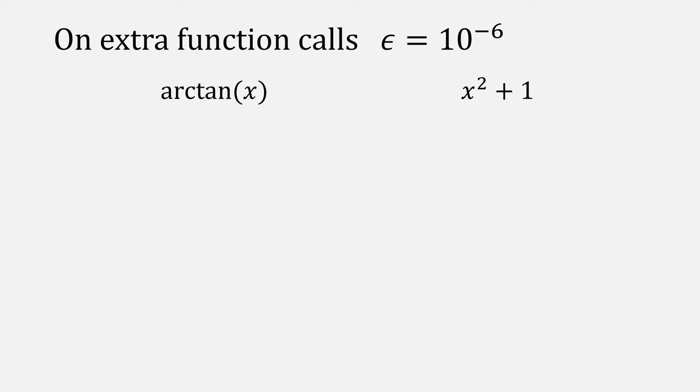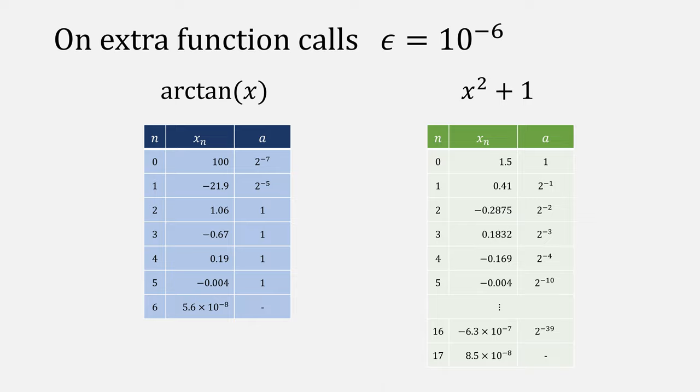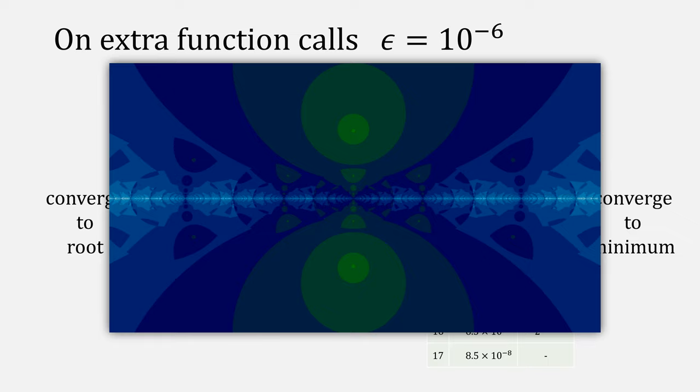Let's examine those extra function calls. On the left, we have the arctangent. On the right, x squared plus 1. On the left, starting from even very far away, a starts as a small number and then goes to 1 as we iterate to find a solution. On the right, even starting kind of close to the minimum, a starts as 1 and as we iterate, a gets smaller. This is because on the left we're converging to a root, and the right we're converging to a minimum.